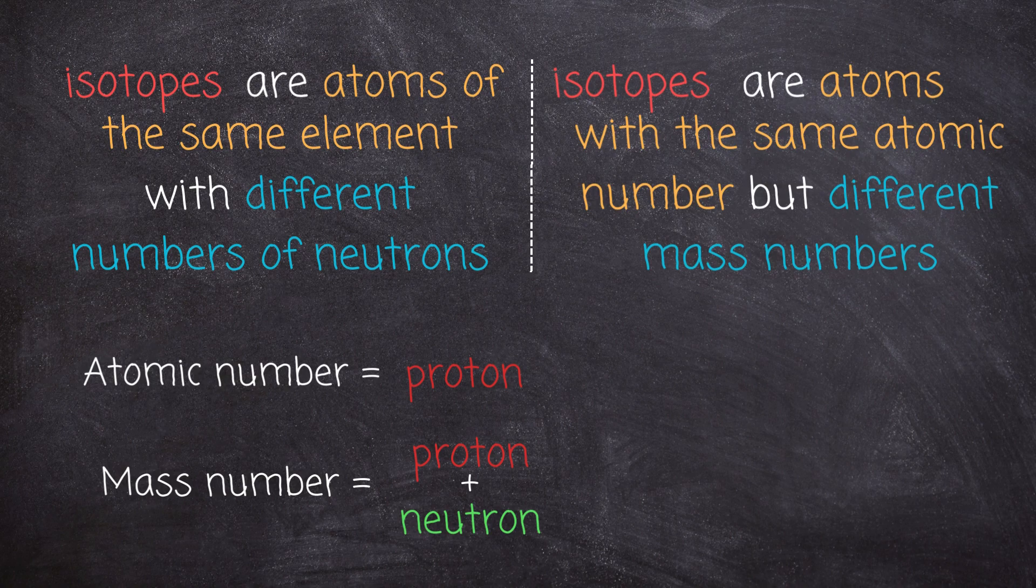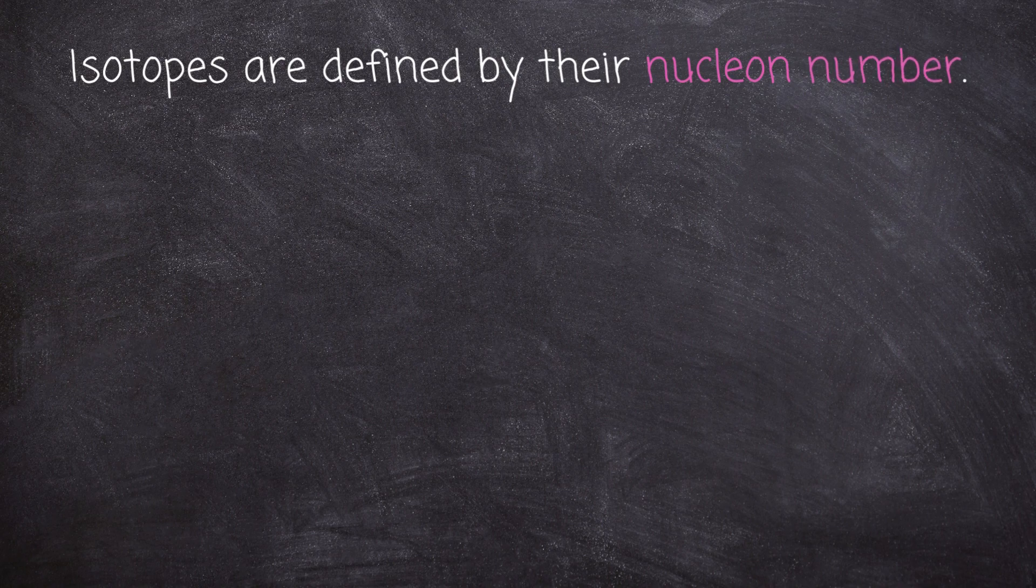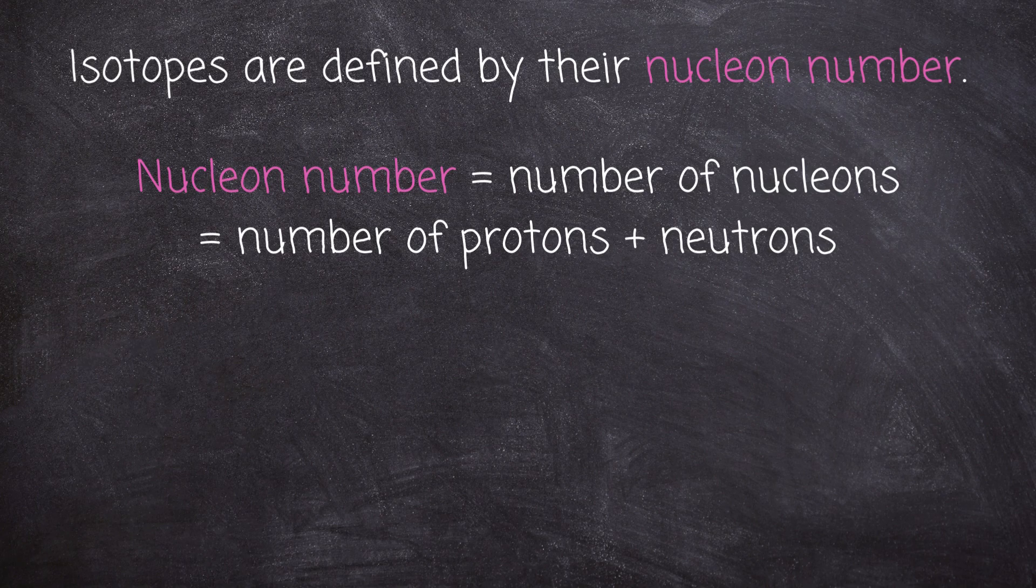An isotope is defined by the element's nucleon number. This is the sum of the number of protons and neutrons in the nucleus. It can be written in different ways.